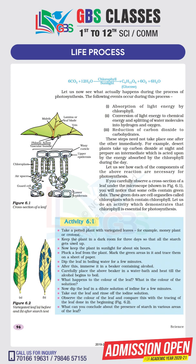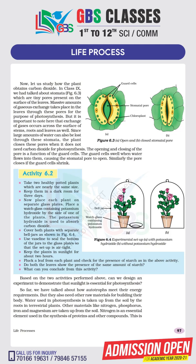For autotrophic nutrition, we need three main things. First, light absorption. Second, conversion of light energy to chemical energy. Third, conversion of carbon dioxide into carbohydrates — that is, the reduction of CO2 into glucose.